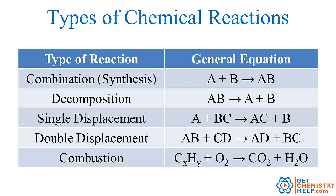The first one is a combination or a synthesis reaction, which is just what it sounds like — you've got two or more substances combining together to make a new substance. A decomposition is basically just the opposite, where you have one substance decomposing or breaking apart into two or more substances. A single displacement is where you have one substance being displaced. Notice in this general format: A plus BC goes to AC plus B, so the C was displaced and went from B to A.